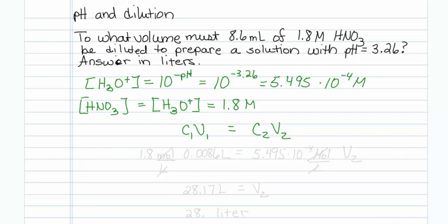The concentration C1 is 1.8 moles per liter. Since I want my answer in liters, I'll put my initial volume in liters, 0.0086 liters. That way my answer will come out in liters as well.